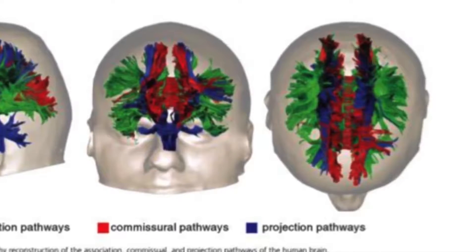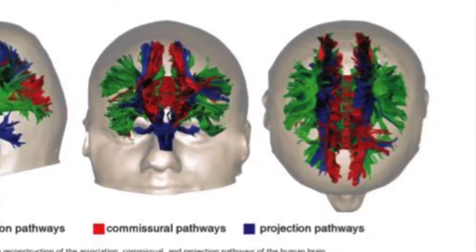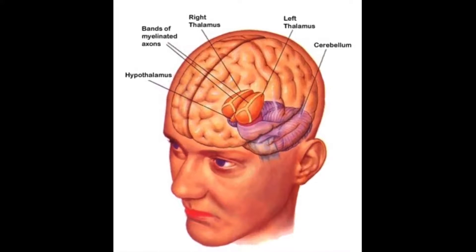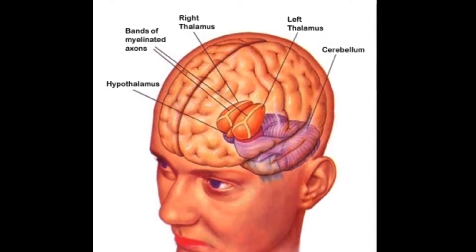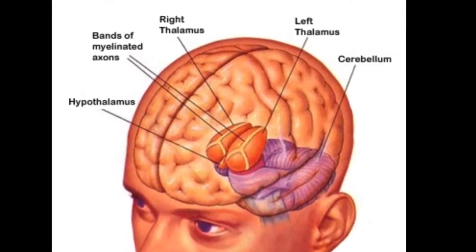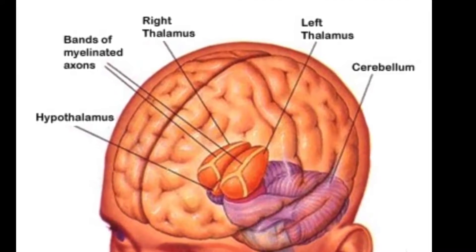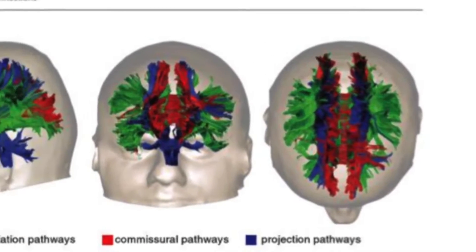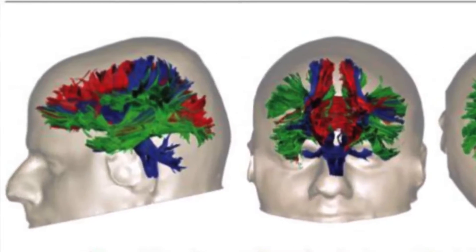The blue projection neural pathways allow brain function to be connected together vertically. This includes the all-important function of sense data gathered together in the thalamus, which is right in the centre of the brain, and then it being relayed out to the various relevant parts of the neocortex, or the outer layer of the brain. The blue projection pathways also go to the deeper brain structures, including the beginnings of the spinal cord.